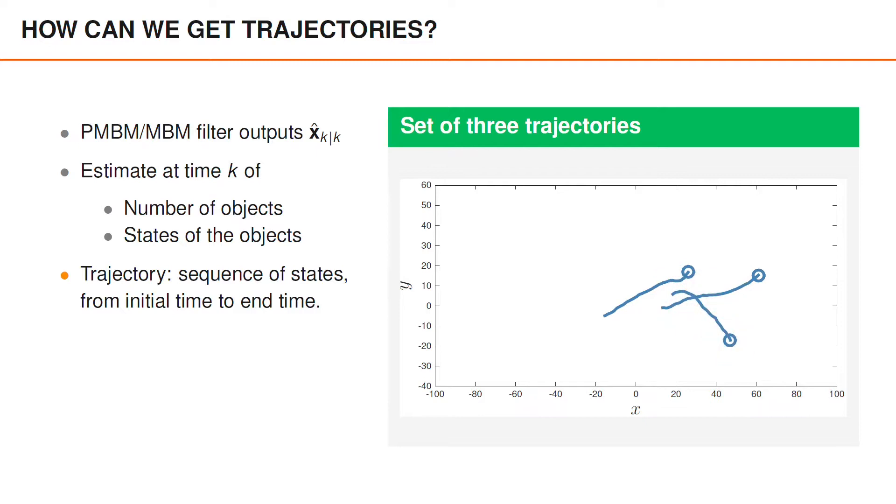So the question is, how can we obtain these trajectories? In tracking literature, there are two main approaches. The first is based on sets of labelled objects, and the other is based on sets of trajectories.